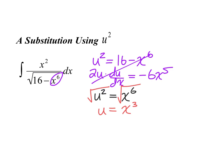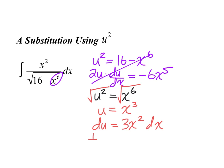Our only goal with u substitution is for the derivative of whatever we call u to help cancel out the other part of the integral. So let's see if this plays out: du would be 3x squared dx. That's pretty close — one third du would just be x squared dx. Now I can redefine my integral.